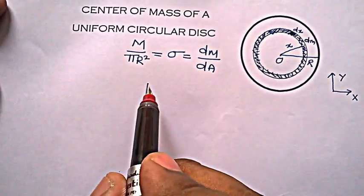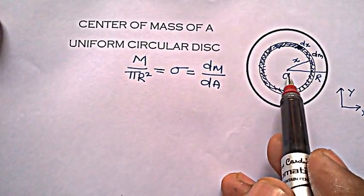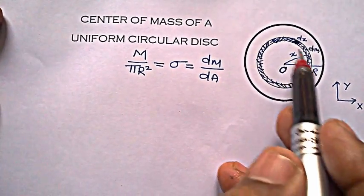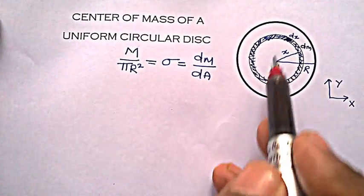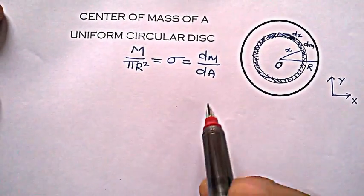Let me find out the center of mass of a uniform circular disk. By just seeing the diagram we can say by symmetry that center of mass obviously lies at the center of this circular disk, but let us prove how it happens.